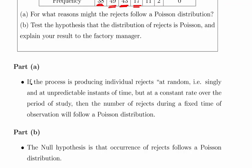If the process is producing rejects at random and unpredictable instances of time but at a constant rate over the period of study, then the number of rejects during a fixed time of observation will follow a Poisson distribution. That's the textbook definition, essentially something along those lines.